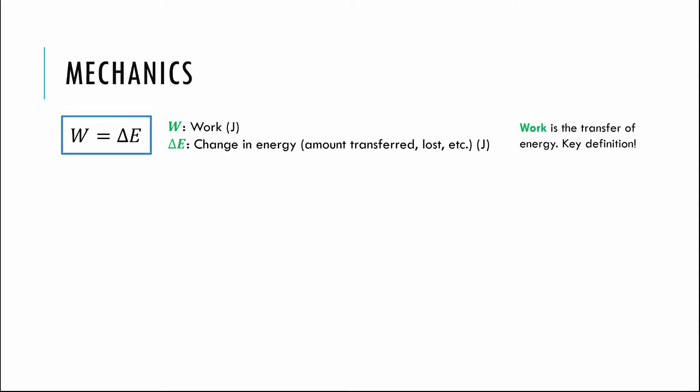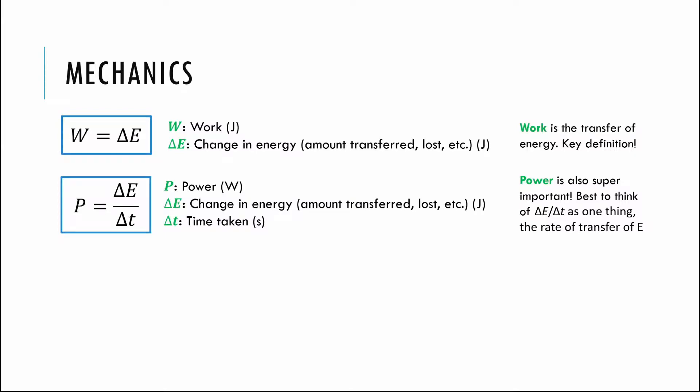In mechanics, the first two hopefully you don't have to work to commit to memory because they should be deep within your physics heart and soul. Work is delta E — it's the transfer of energy, how much energy gets added, lost, or taken away by friction. Power is the rate of transfer of energy: delta E over delta t. Calculus fans, that's dE/dt, a rate of change. Don't go to P = Fv unless it really applies — these definition equations are the first place you should go.